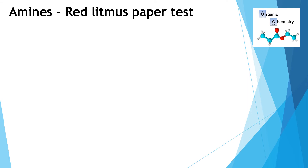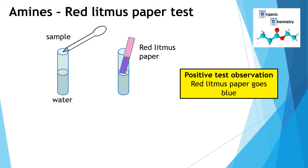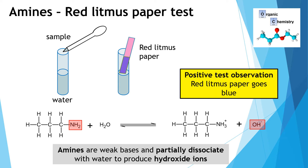We can also test for amines. Amines are organic compounds that have an NH₂ group, and the presence of the NH₂ group makes amines basic. What we do is take some water, add the sample of amine, mix it around, and then test the solution with red litmus paper. The red litmus paper will go purple when placed in the solution if an amine is present. This happens because the amine is a weak base — when added to water it accepts a proton and produces hydroxide ions, which turn the red litmus purple or blue.